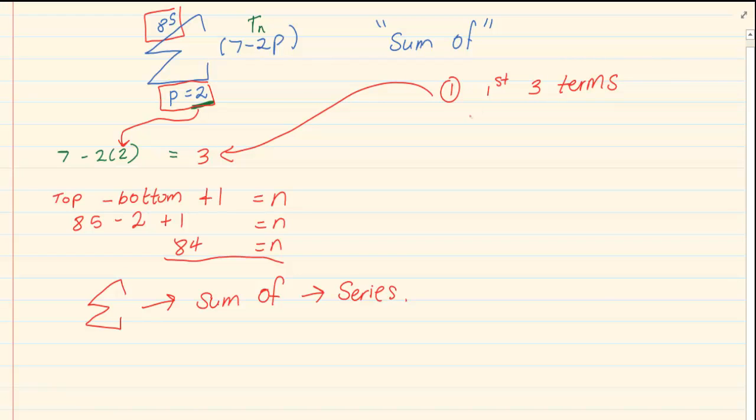The second thing is to determine n. And number 3 is to decide if it's arithmetic or geometric. We decide if it's arithmetic or geometric by doing the test.